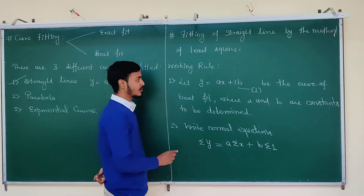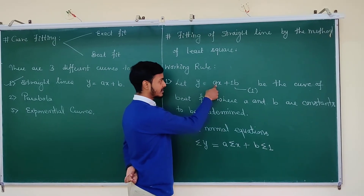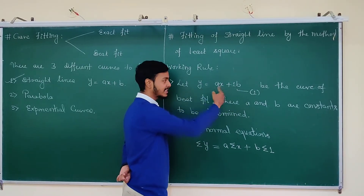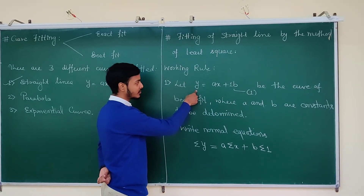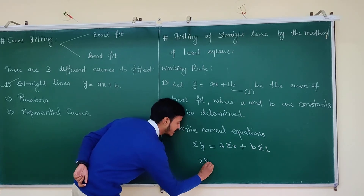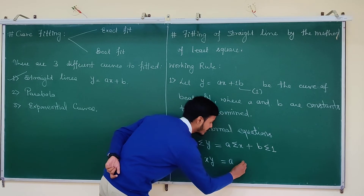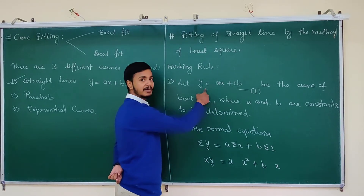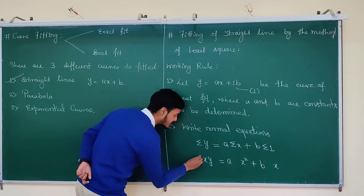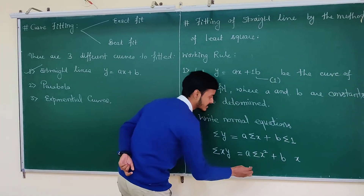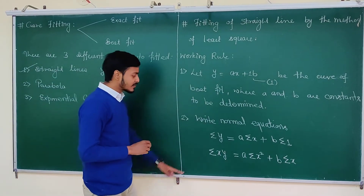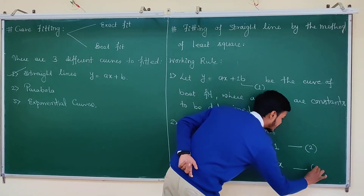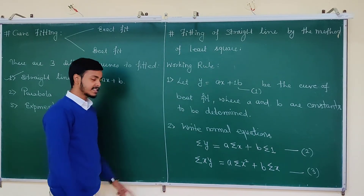In a similar way, look at the coefficient of another constant a, which is x. Multiply the equation by x and take the summation. When you multiply by x you get: xy equals ax squared plus bx. Taking summation gives: summation xy equals a summation x squared plus b summation x. So these are the two normal equations. This is step number 2.